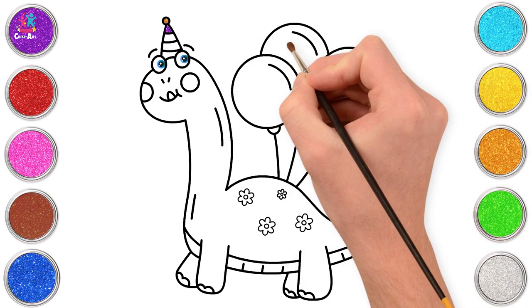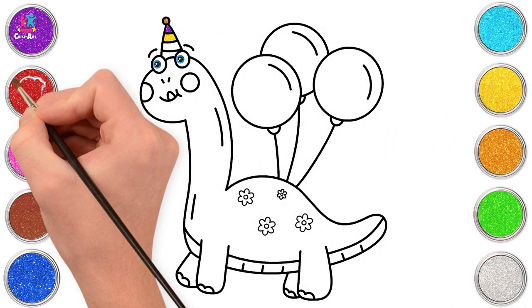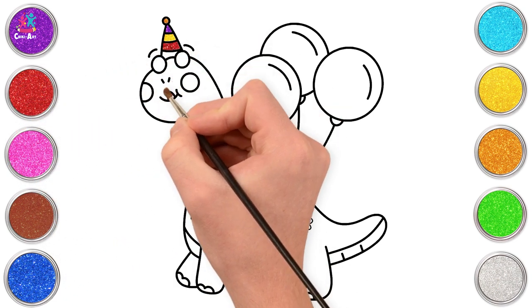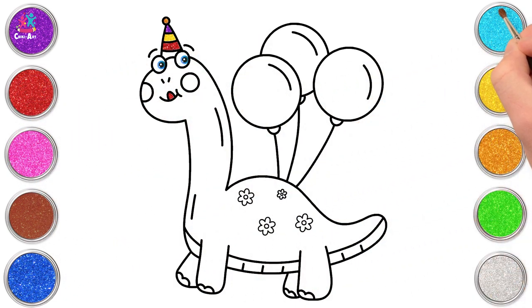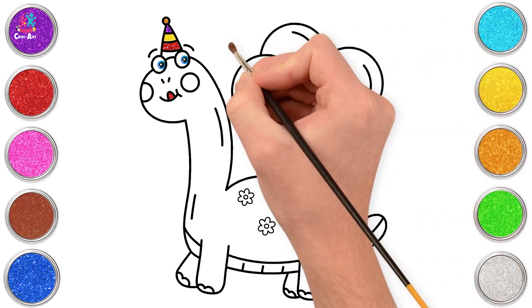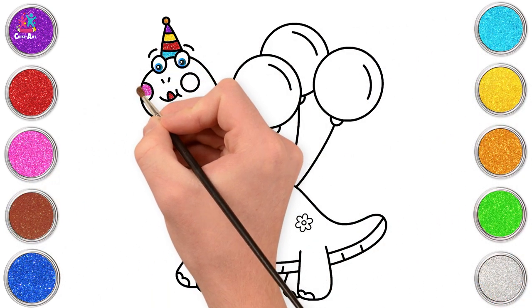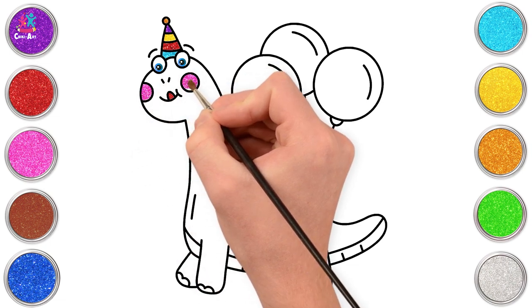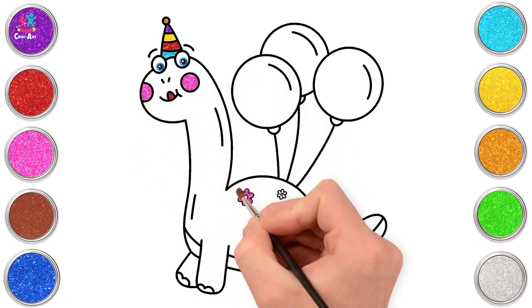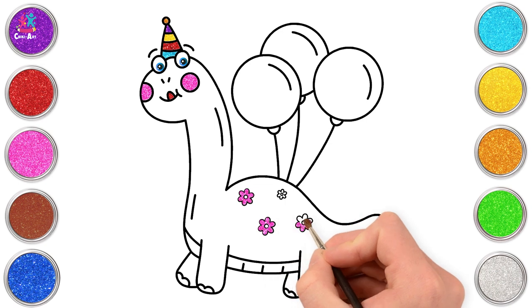I do love his party hat. Red tongue, turquoise for the last stripe. Now let's go for some pink rosy cheeks and flowers.